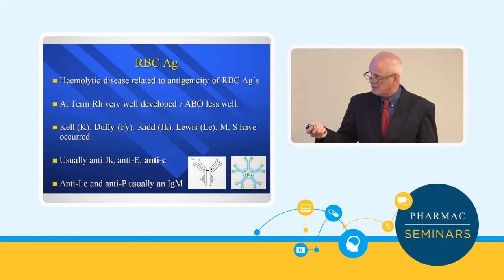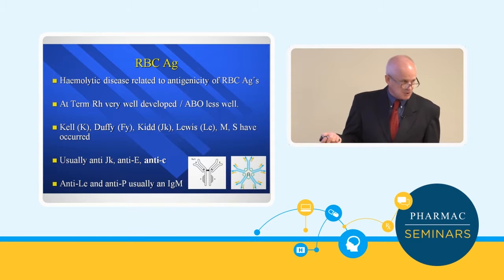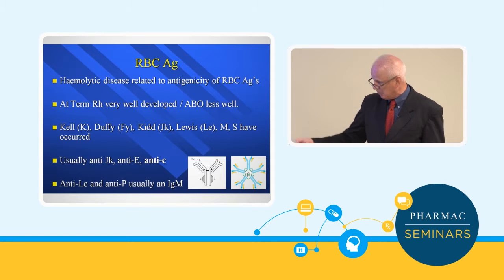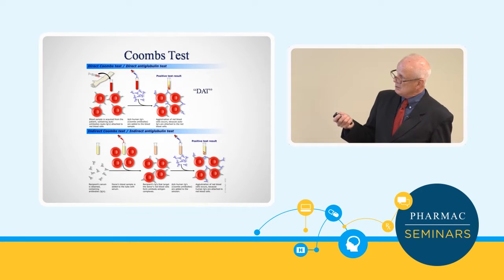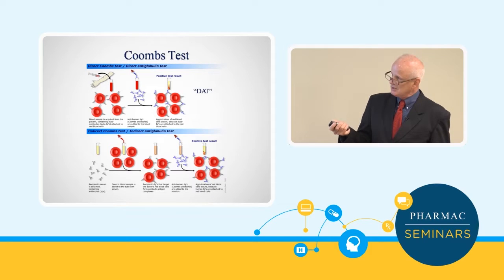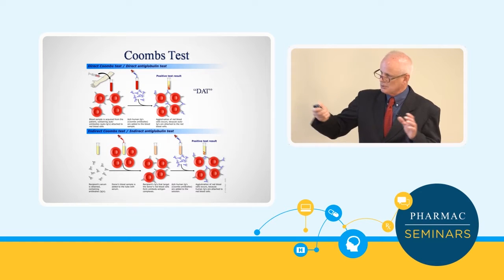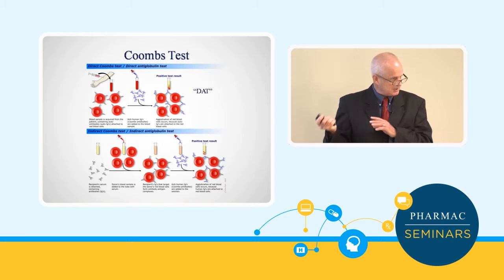The significant antibodies are anti-Kidd, anti-big-E (one of the Rhesus group), and anti-little-c. Other antigens in antibody reports are usually IgM — the large molecule — which shouldn't cross the placenta and cause problems. The direct Coombs test works by taking the baby's red blood cells with the mother's antibodies attached, adding a serum with antibodies that attach to antibodies, making all the red blood cells clump together, which shows up on an analyzer.